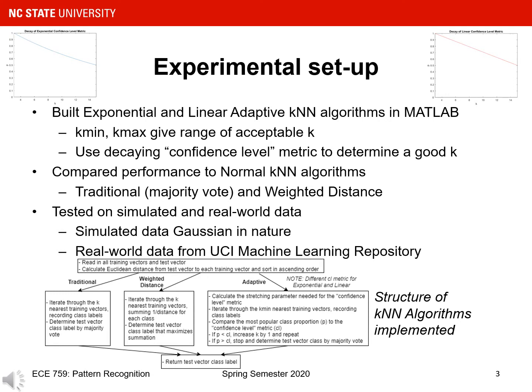For my experiment, I implemented both an exponential and linear adaptive KNN algorithm in MATLAB. Instead of specifying a k value, the user specifies a k-min and k-max to provide the algorithm with an acceptable range of k values. These algorithms use a decaying confidence level metric to determine a good number of k for classifying. The confidence level metric is based on k-min, k-max, and the number of classes present. During classification, the proportion of the most popular class must be greater than the confidence level metric for that value of k for the classification task to end.